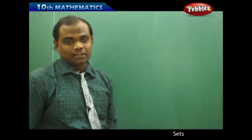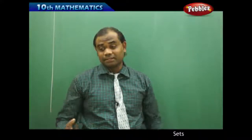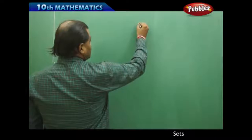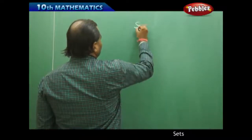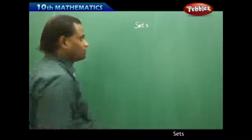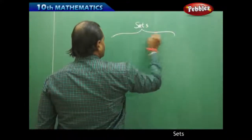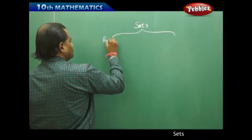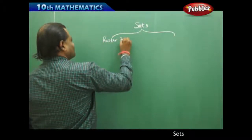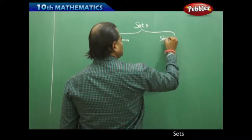Continuing with notations, there are two ways of representing sets. One is the roster form and the other is the set builder form. Sets can always be represented in two different forms depending on the problem — one referred to as the roster form and the other as the set builder form.